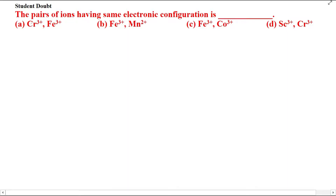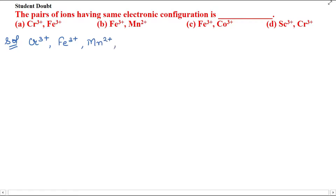Hello students, here I'm addressing a student doubt. The question asks about pairs of ions having the same electronic configuration. You are given four pairs and out of these four pairs you have to find out which pair has the same number of electrons or same electronic configuration. The ions given are: Cr³⁺, Fe³⁺, Mn²⁺, Co³⁺, and Sc³⁺.